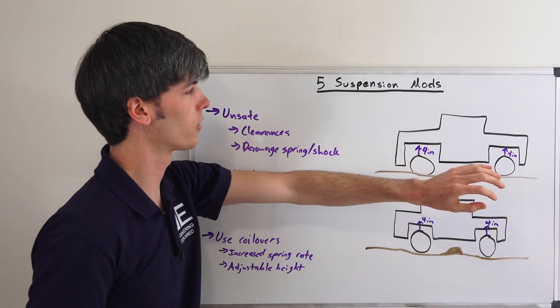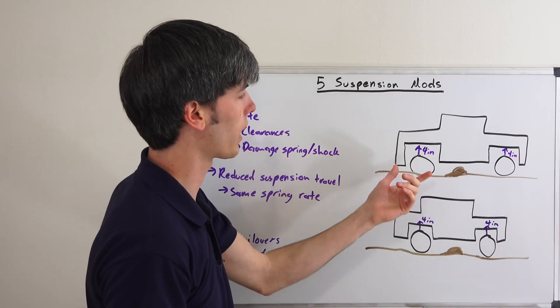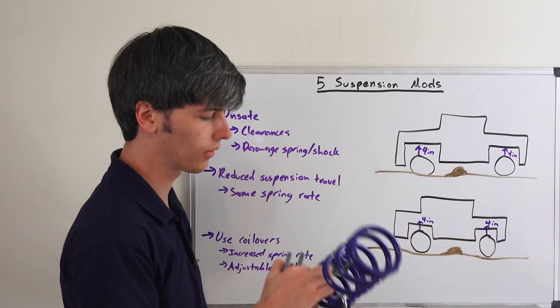Let's say you're going over this bump here. With your original suspension at its original height you go over that bump and your spring compresses four inches. Now you've lowered your vehicle with these clamps.